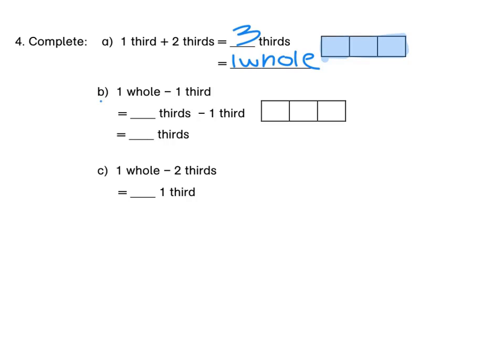For B, if we have 1 whole — we're going to take this whole block. Do you notice that 1 whole is equal to 3 thirds, like we saw above? Now if we minus 1 third from it, this means we are left with 2 thirds.